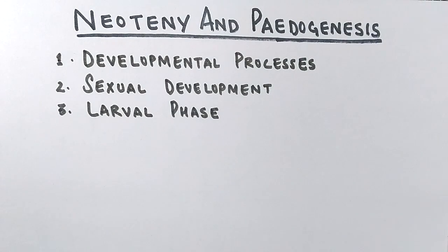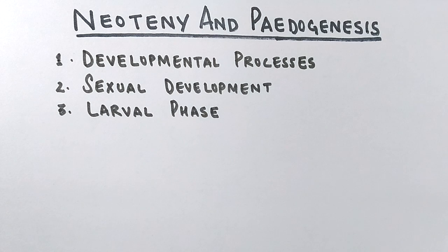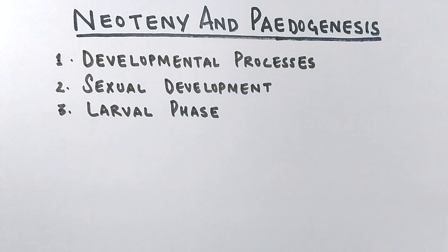In order to understand neoteny and pedogenesis, we must know what somatic cells and germ cells are. We have two types of cells in our body: somatic cells and germ cells. Somatic cells are the cells that make up all body tissues — all cells except the gametes, which originate from germ cells. So any cell other than a gamete is a somatic cell.